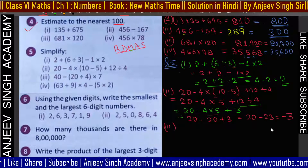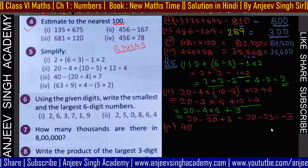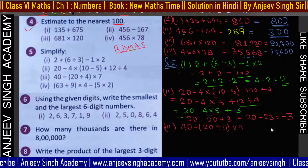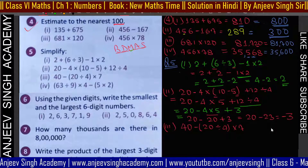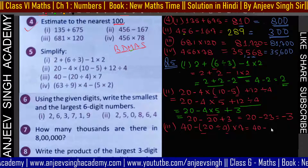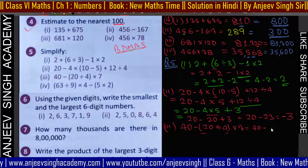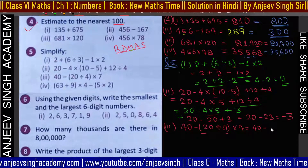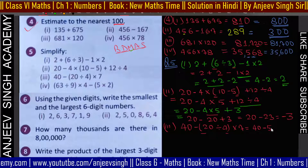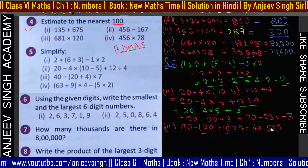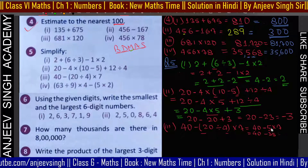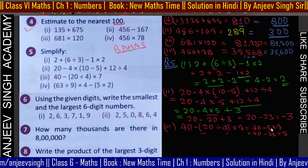Next question: 40 minus (20 ÷ 4) × 7। Bracket पहले: 20 ÷ 4 = 5। तो 40 minus 5 × 7। Multiplication पहले: 5 × 7 = 35। तो 40 minus 35 = 5। Answer आया 5।